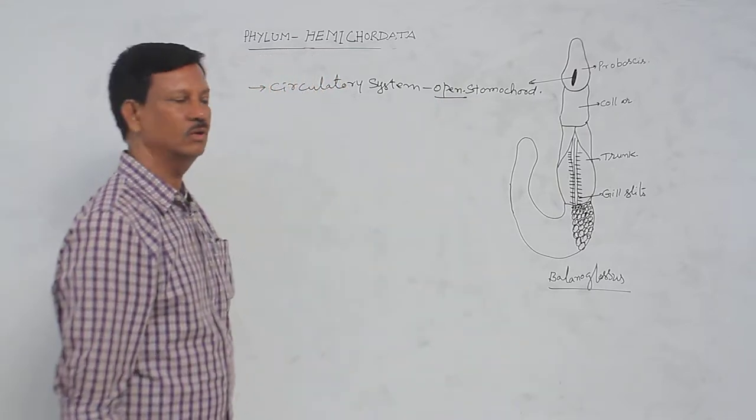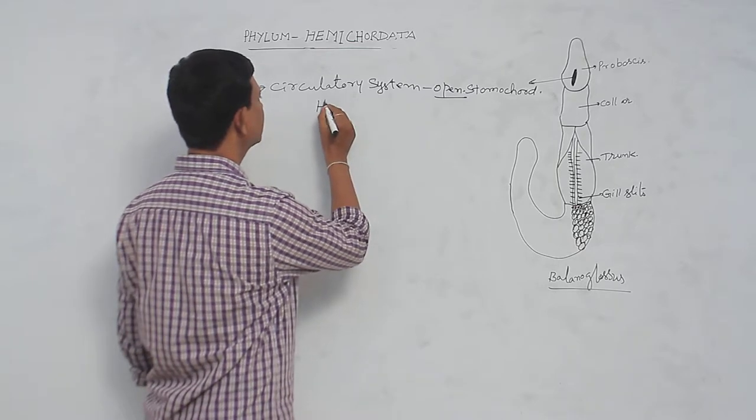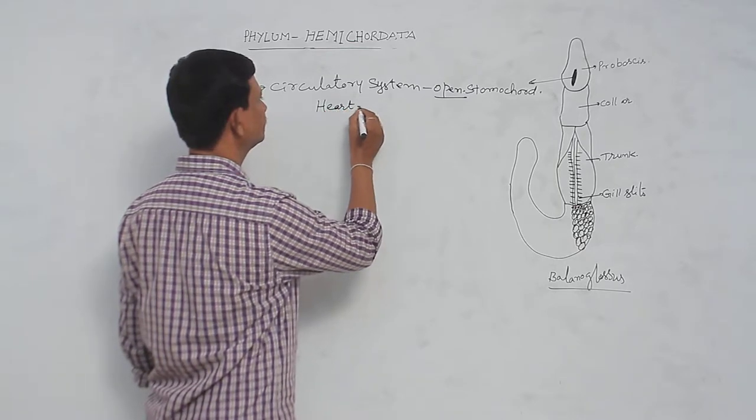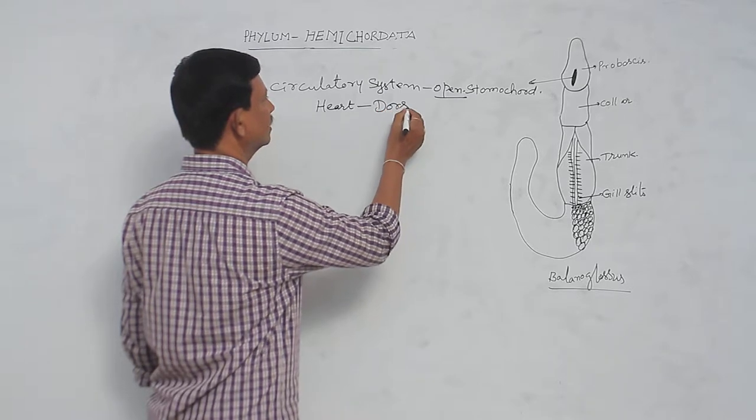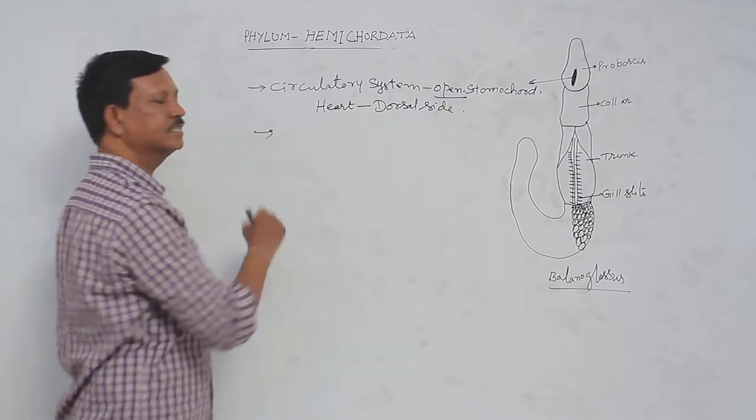This is also a difference between the chordata and non-chordata. Heart is present on the dorsal side, heart is situated at the dorsal side of the body and respiration.